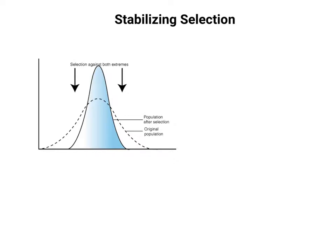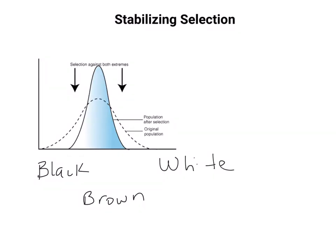The first type is stabilizing selection. Stabilizing selection is when nature selects against the two extremes in a population. Darwin said there are variations in a population, and nature is going to choose those traits that are favored in a given environment. Let's say we have black, brown, and white variations in our bunny population, and the environment has changed so that it is brown and sandy all year long.